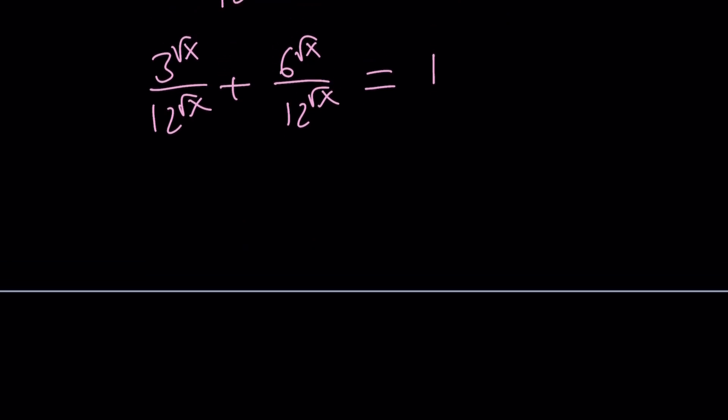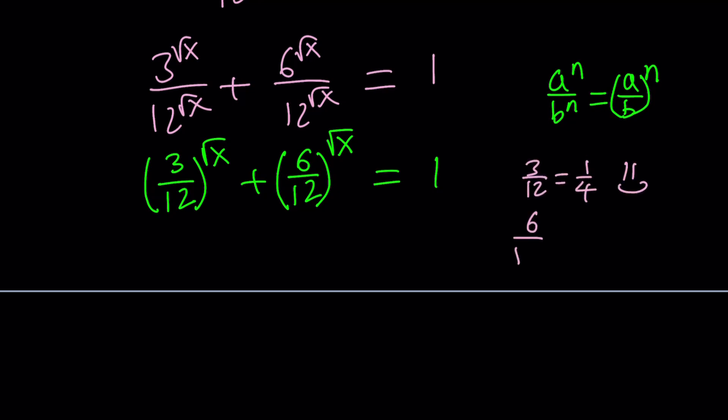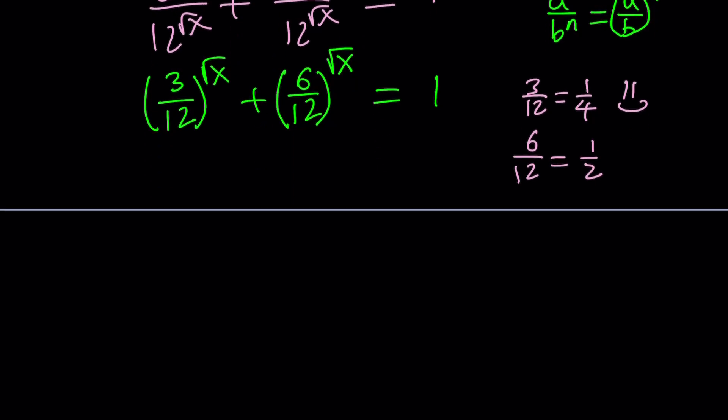Now let's simplify this a little bit more. From here since the exponents are equal I can divide the bases. Remember the rule. If you divide a to the n by b to the n, that is equivalent to a divided by b together to the power n. So we can write it as 3 over 12 to the power square root of x plus 6 over 12 to the power square root of x equals 1. Let's simplify this a little bit more. 3 over 12 can be written as 1 over 4, and 6 over 12 can be written as 1 half. So we can write this as 1 fourth to the power square root of x plus 1 half to the power square root of x equals 1.